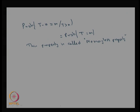In discrete time the geometric distribution satisfies the memoryless property; in continuous time the exponential distribution satisfies it. From the Bernoulli process we derived the binomial process and the geometric distribution. If instead of waiting for the first success we wait for the r-th success, we get the negative binomial (Pascal) distribution. When r = 1 this reduces to the geometric distribution.